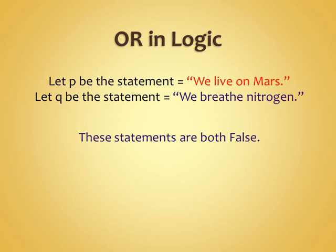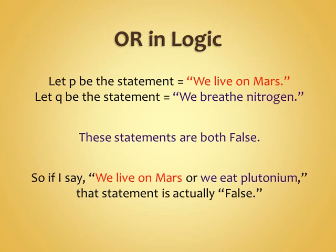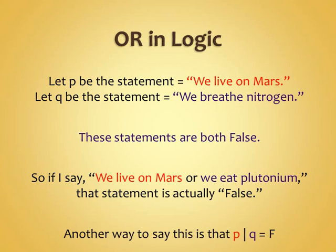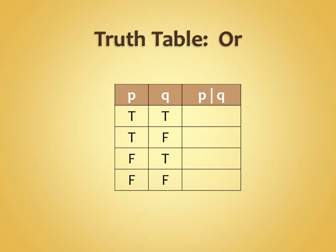If I said 'we live on Mars OR we eat plutonium,' they're both false. So 'we live on Mars OR we breathe plutonium' — that's a false statement because false OR false is still false. So: true OR true is true, true OR false is true, false OR true is true, and false OR false is false.